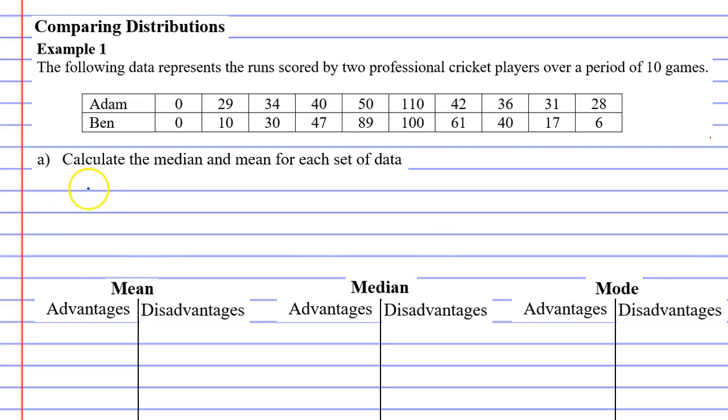Let's start with the mean for Adam and then the mean for Ben. When you add all the numbers up for Adam you'll get 400, and when you add the scores up for Ben you get 400 as well. Since they both played 10 games we divide by 10 and they get a mean of 40. So they both have the same mean.